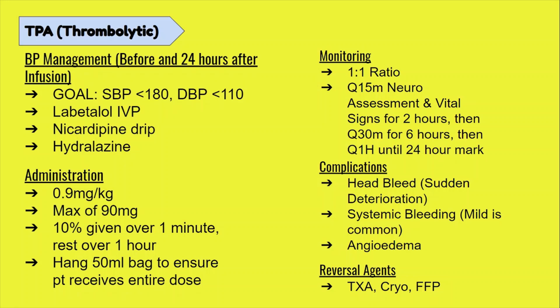If any of the non-expected complications occur — such as a decrease in mentation or a GI bleed — you must stop the TPA and notify the team as soon as possible. For example, if the patient's mentation has declined, the team needs to know so a repeat head CT is ordered to rule out a head bleed. Finally, the reversal agents for TPA are TXA, cryo, and FFP.